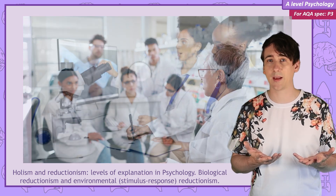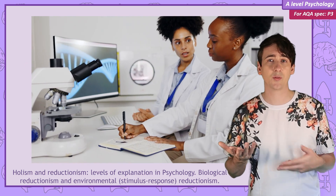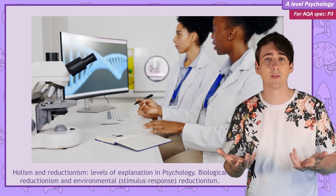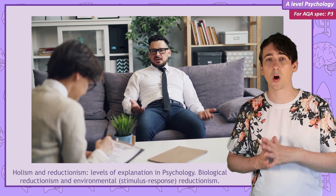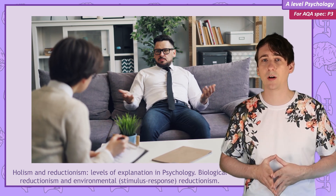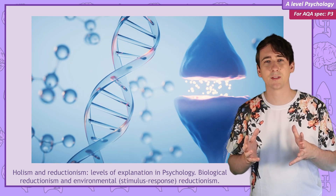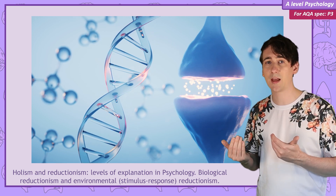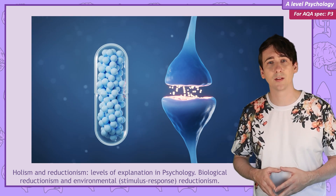We can test simple explanations, so a genetic test for the presence of certain genes in the population of people with a disorder, or studies that correlate adult aggression with childhood experiences. It even helps with treatments. If the genes code for neurotransmitter levels, then we can use drug treatments to fix an imbalance.